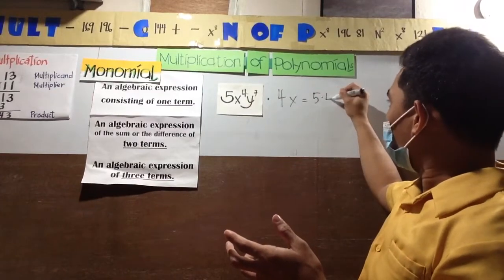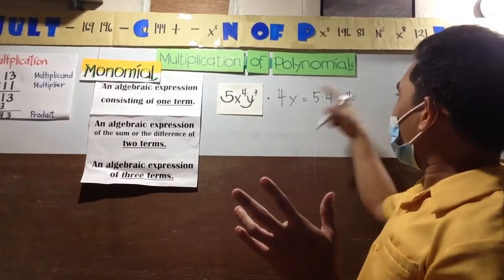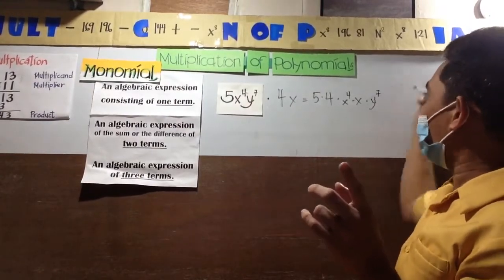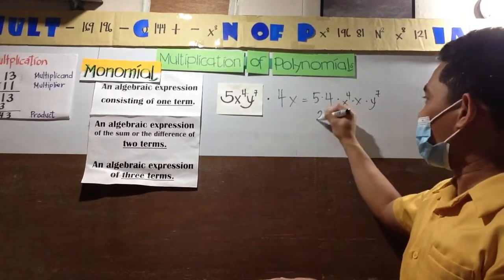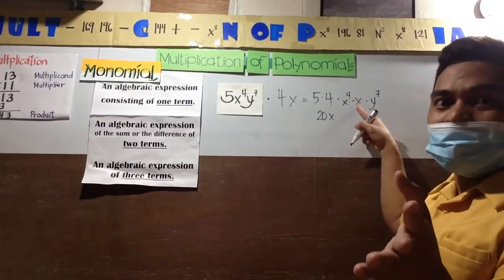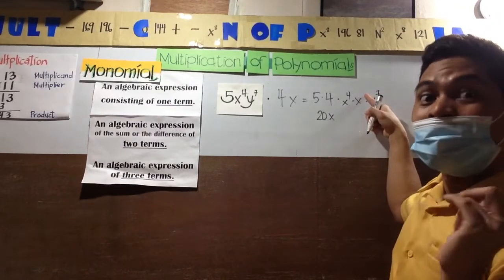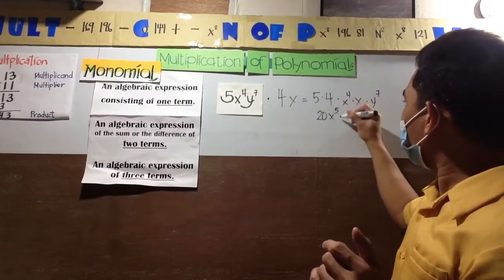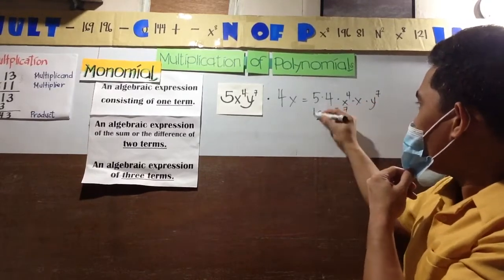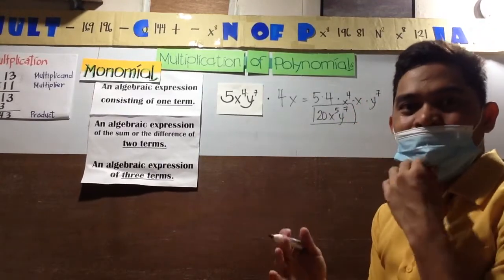So 5 times 4, times the variables together - x raised to 4 and x, then y times y raised to 7. 5 times 4 will be 20. x raised to 4 times x will be x raised to 5 - the numerical exponents, when you add them 4 plus 1 will be 5. And y raised to 7, since it has no counterpart, just bring it down. So the answer is 20x raised to 5, y raised to 7. Any questions?